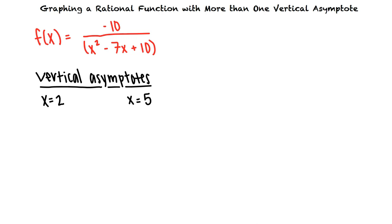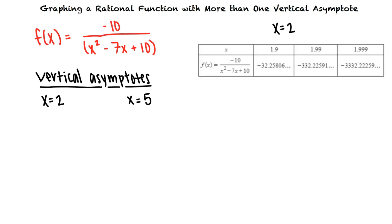The next step is to check the behavior of the graph of our function as x approaches each side of the vertical asymptotes. Let's start with the asymptote x equals 2. We need to evaluate f of x for some values of x less than 2 but getting close to 2. We see that as x approaches 2 from the left, f of x decreases without bound. This means that f of x approaches negative infinity as x approaches 2 from the left.